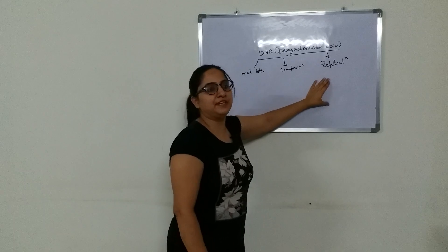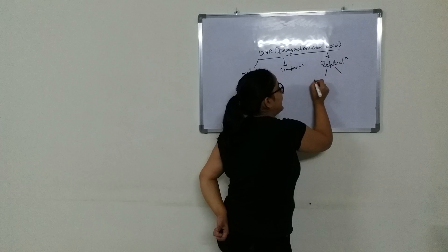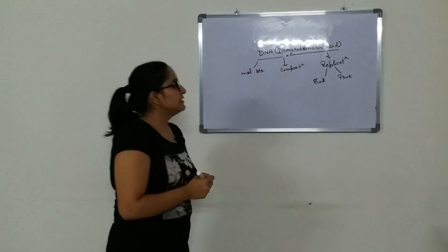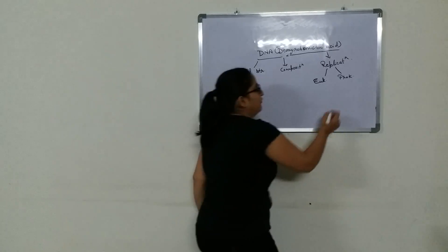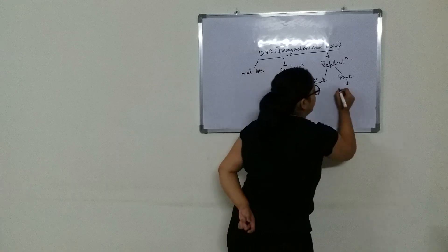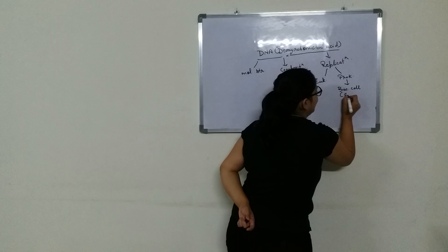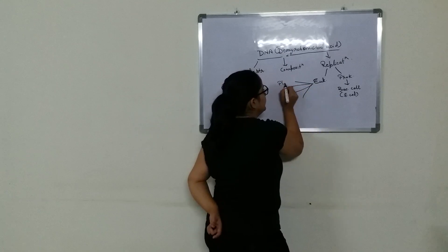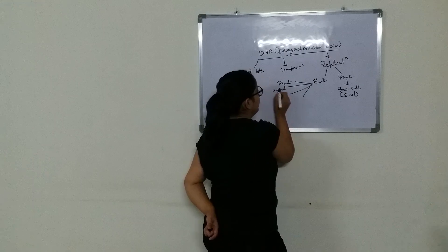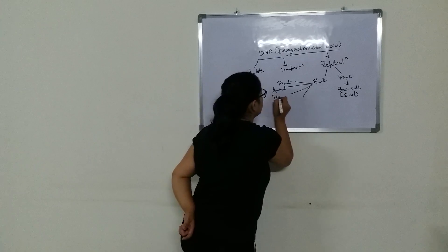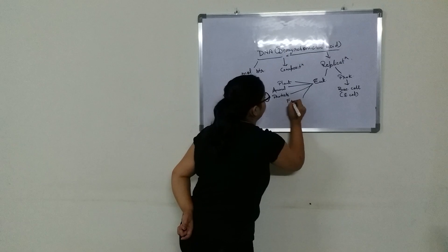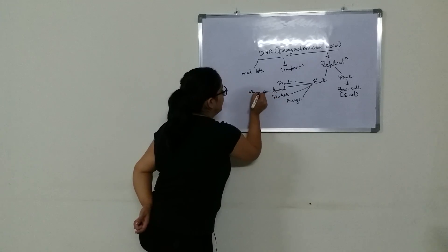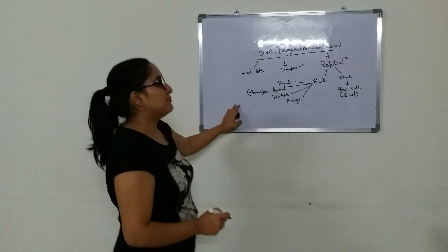We'll be covering the molecular structure of DNA, the composition of DNA, and the replication of DNA. The replication of DNA is found in both eukaryotic and prokaryotic cells. For prokaryotic cells, the example is a bacterial cell — E. coli. For eukaryotic cells, examples include plants, animals, protists, and fungi.